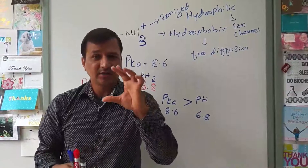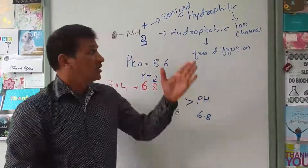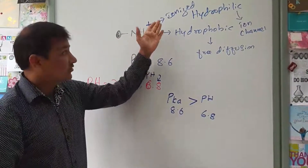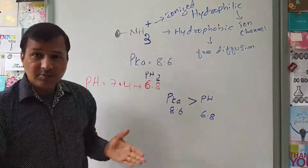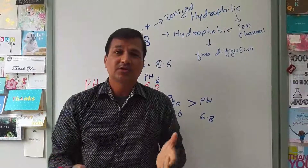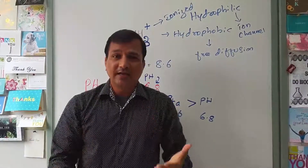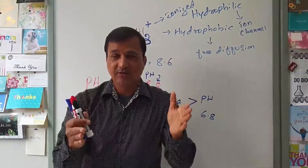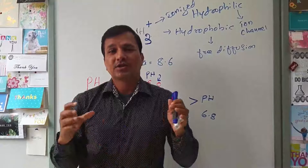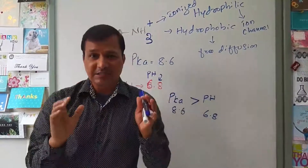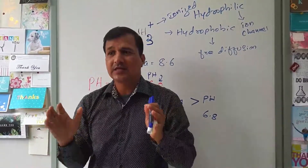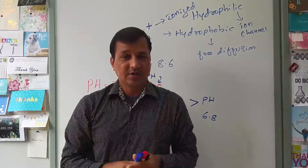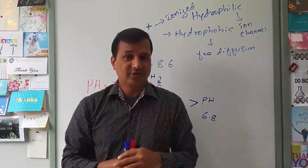An ion channel is a protein channel containing different amino acids. Since the drug has an NH3+ amino group — which is protonated and carries a positive charge — it will bind to negatively charged amino acids in the intracellular domain of the ion channel. That is why option C in the question refers to negatively charged aspartyl or glutamyl residues, and this is the answer.